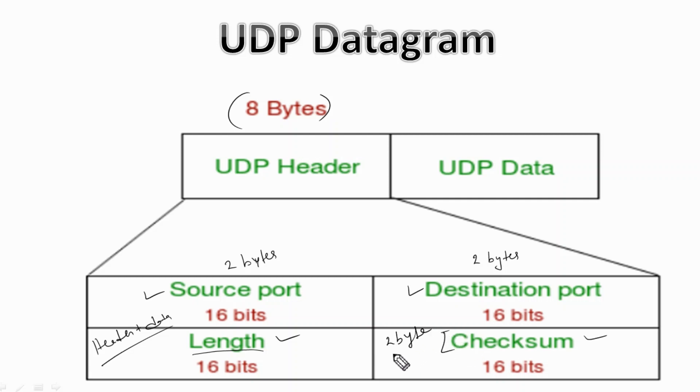The checksum is the one's complement of the one's complement sum of the UDP header, the pseudo header of information from the IP header, and the data padded with zero octets at the end to make a multiple of two octets.